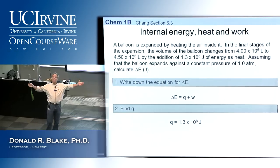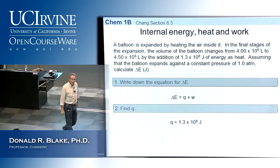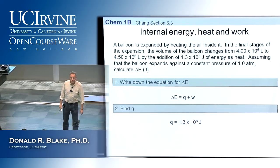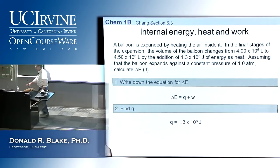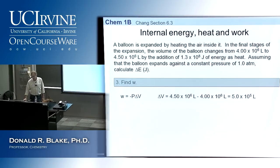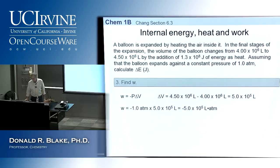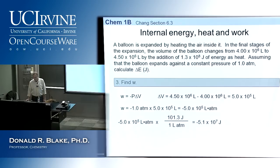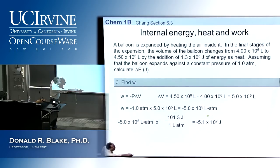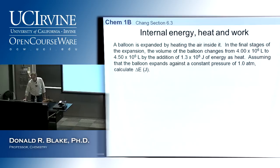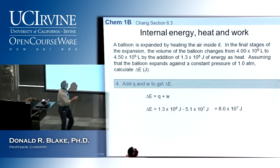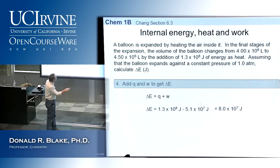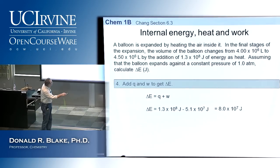The conversion — I'm not going to give you on Thursday — is 101.3 joules per liter-atmosphere. So you multiply: 500,000 liter-atmospheres times 101.3, and you get this many joules. Then you add the two together. This is how much energy you put in, this is how much energy you got out as work, and this is the internal energy right there.